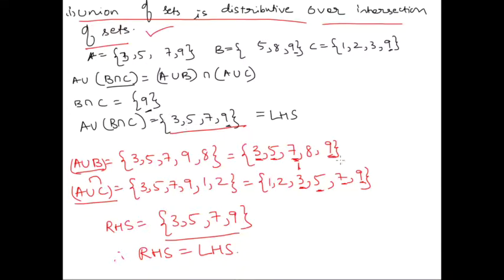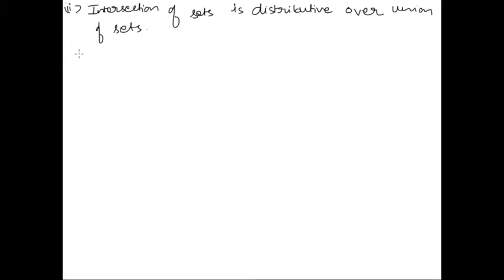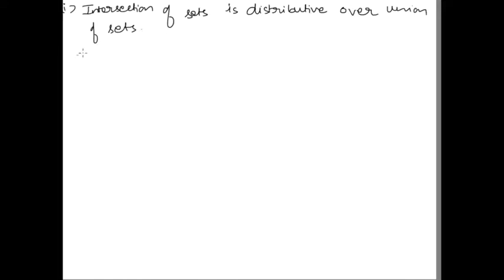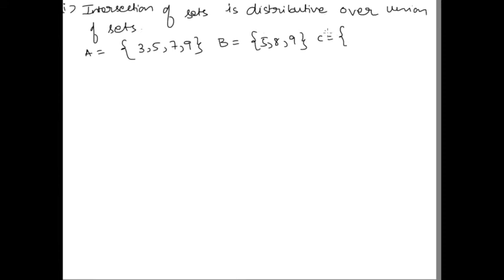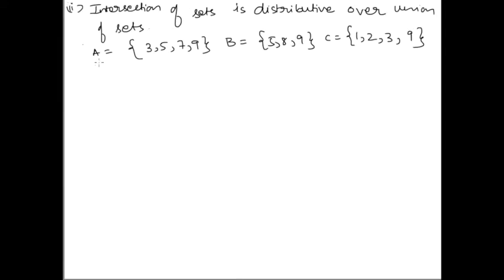Now let's check out case 2 with another example using the same sets: A = {3, 5, 7, 9}, B = {5, 8, 9}, and C = {1, 2, 3, 9}. We are trying to prove that A intersection (B union C) is equal to (A intersection B) union (A intersection C).